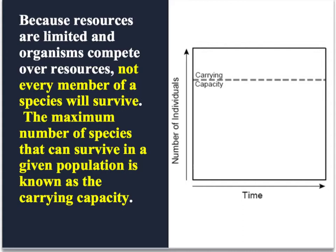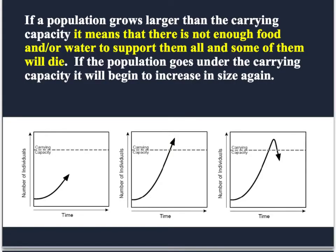When your population continues to grow, sometimes it's going to get larger than your carrying capacity — you'll have way more organisms than you have food and water. Think of holidays when family comes over and you might have 16 people in a house that should only hold eight. When the population gets larger than the carrying capacity, there's not going to be enough food or water to support all the living organisms in that population.